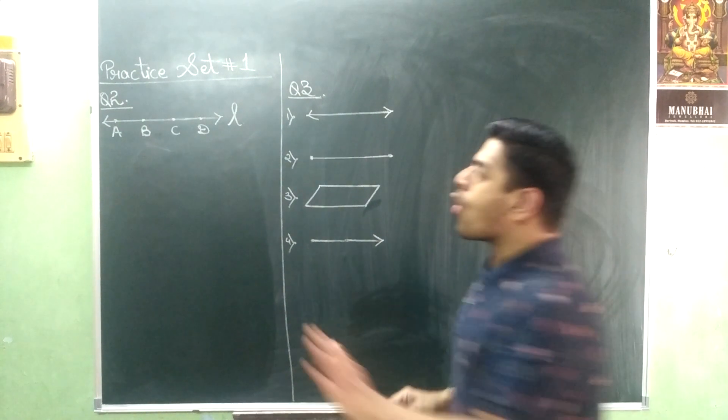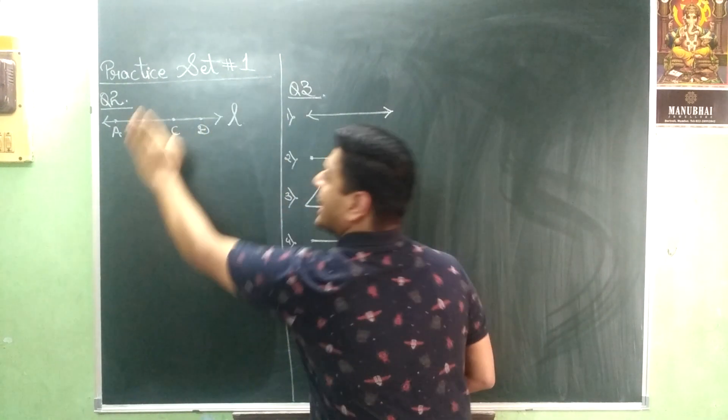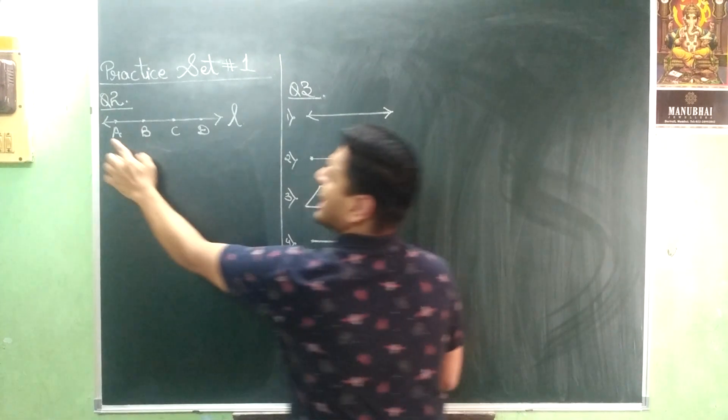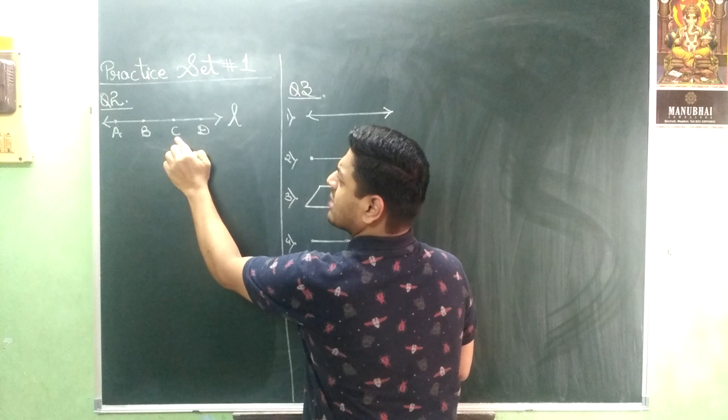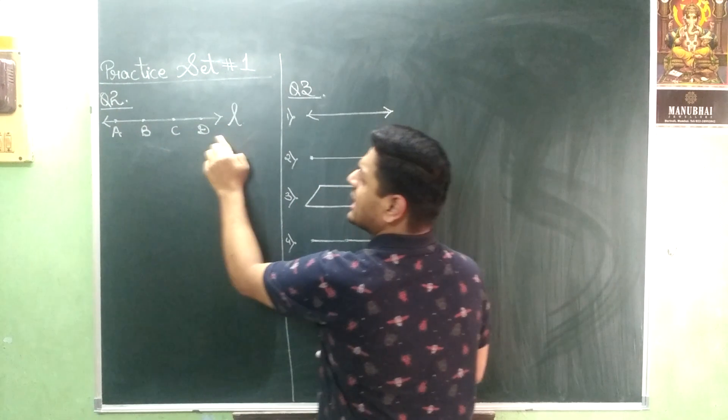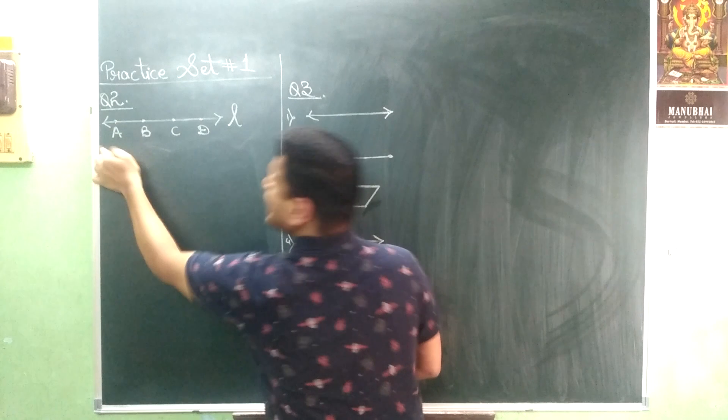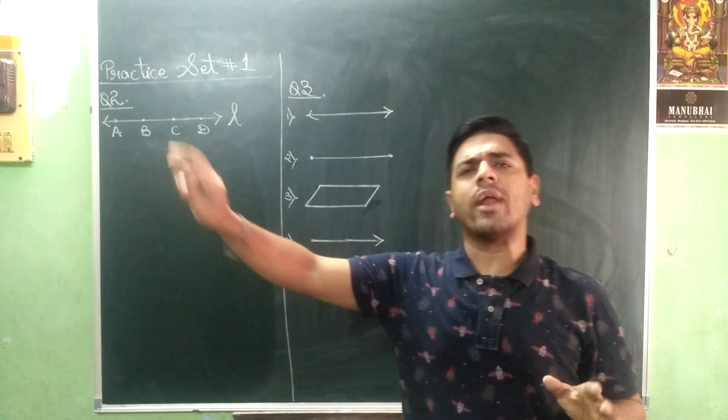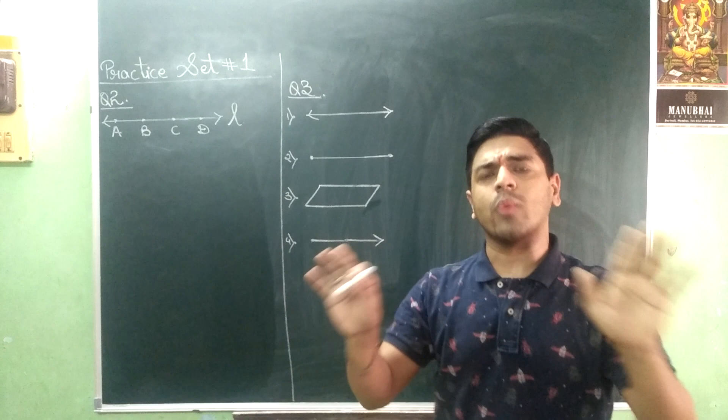Right now over here you can name this line in different forms like line AB, line BC, line CD, line AD, line BD, line DA, line DB, and like this way you can go on and on. But we are not here to waste our time.